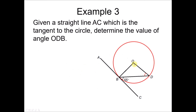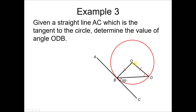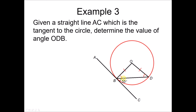Example 3: given that the straight line AC is a tangent to the circle, determine the value of angle ODB. Since AC is a tangent and OB is a radius, we know that angle OBC is 90 degrees. Looking at this triangle, OB and OD are both radii, so they have the same value — this is an isosceles triangle, so the base angles are equal. Since OB as radius and AC as tangent form a 90-degree angle, we take 90 minus 55 to find this value, which is 35 degrees. Since the base angles are equal, this angle is also 35 degrees. So angle ODB equals 35 degrees.